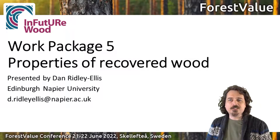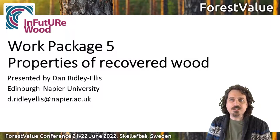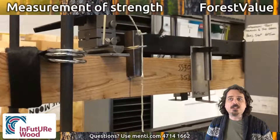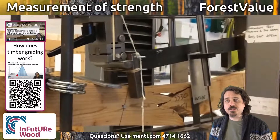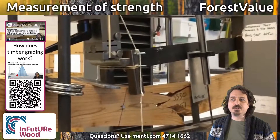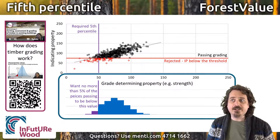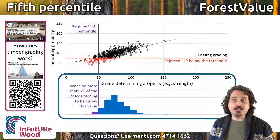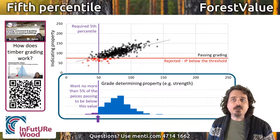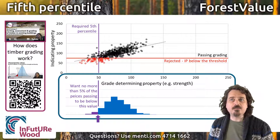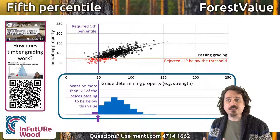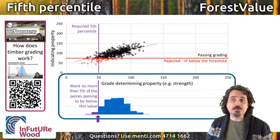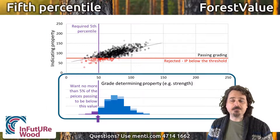Strength grading of structural timber isn't only about strength, but strength is the most difficult part of it. We can only measure strength destructively, so we have to use predictions and a probabilistic approach. This is done with the characteristic value, a fifth percentile. We grade in such a way that no more than 5% of the pieces have a strength lower than the strength class requirement. We just don't know which pieces they are unless we break them.